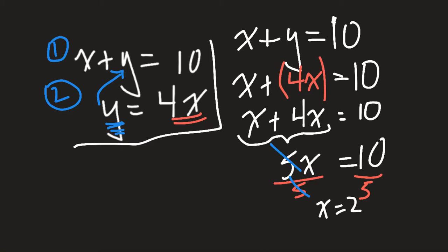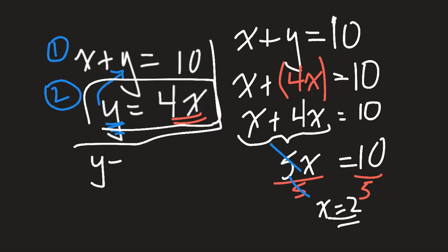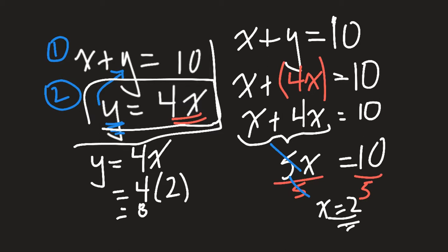Once you have one of your values, you can take it and substitute it back into either one of your equations to find y. I'm going to use equation number 2 because it's so easy. So I have y equals 4x. I now substitute our value for x: that's y equals 4 times 2, and 4 times 2 is 8. So my final answer is x equals 2, y equals 8.